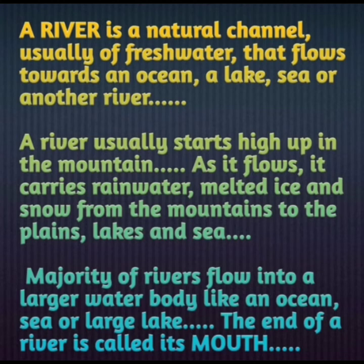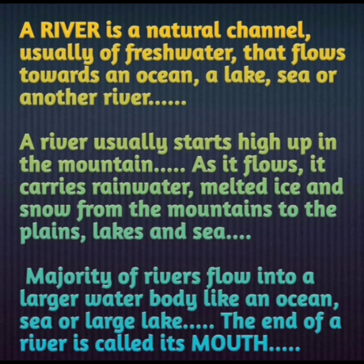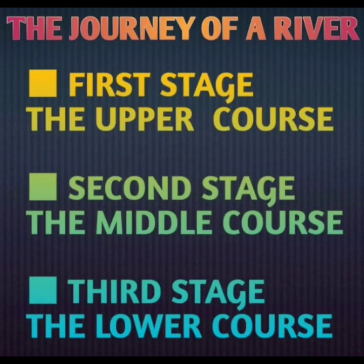The majority of rivers flow into a larger water body like an ocean, sea, or large lake. The end of the river is called its mouth. After flowing through the plains, a river divides into tributaries — different channels of water — and forms deltas, which are triangular-shaped pieces of land surrounded by water on all sides. Finally the river falls into the ocean at its mouth.